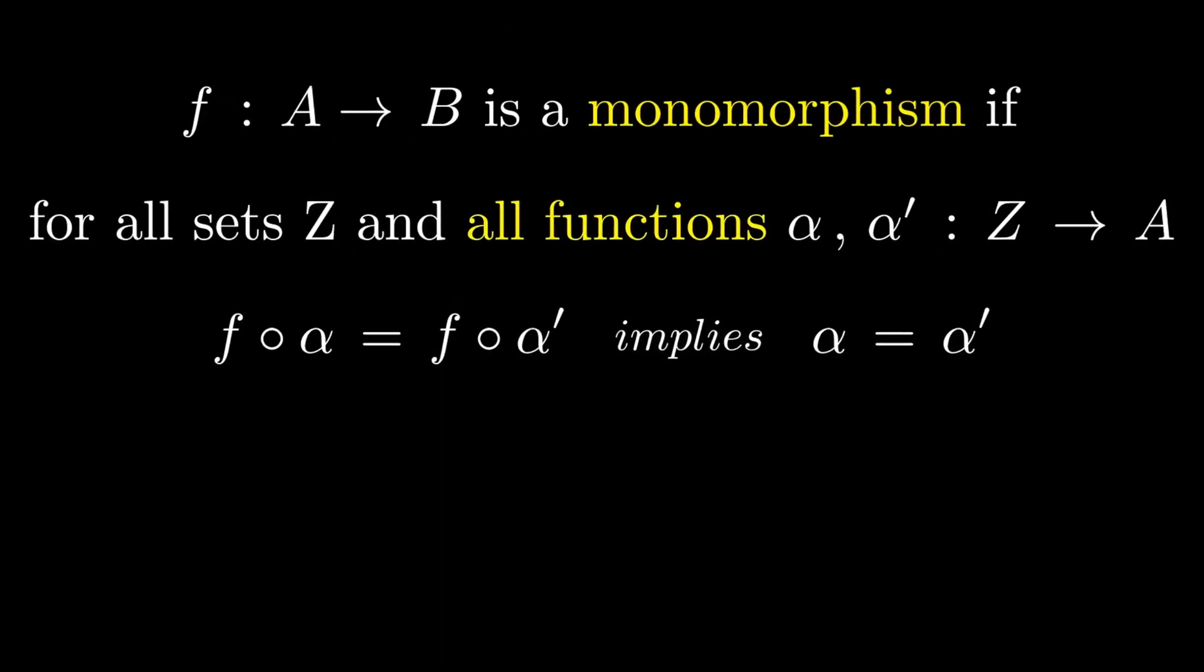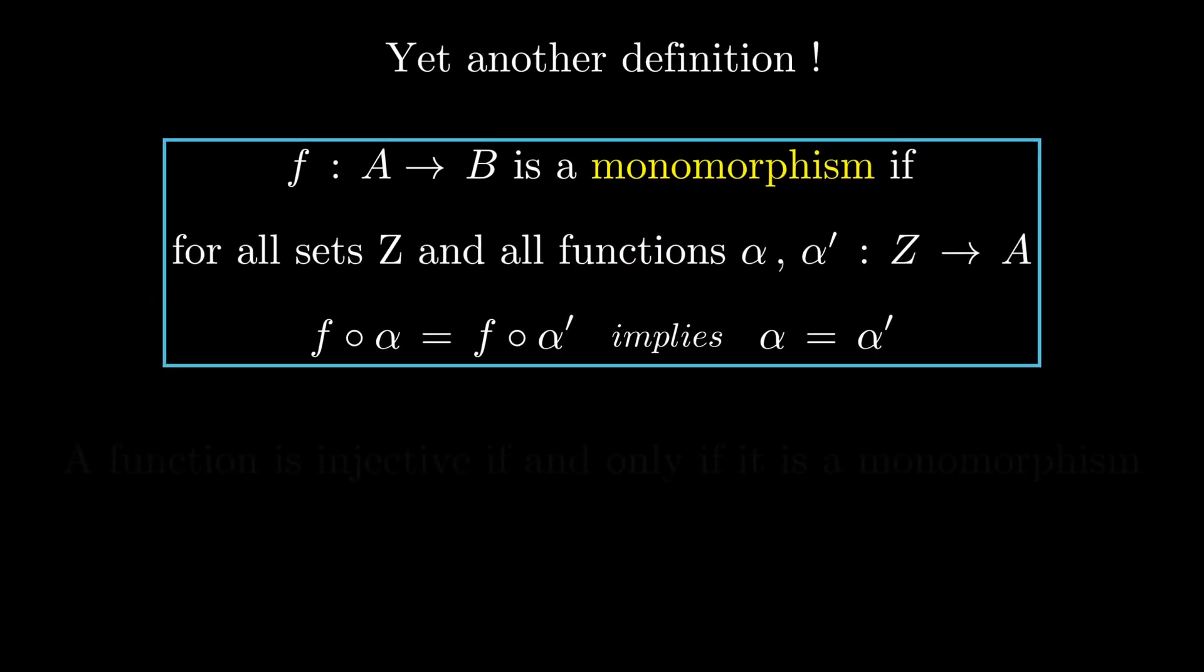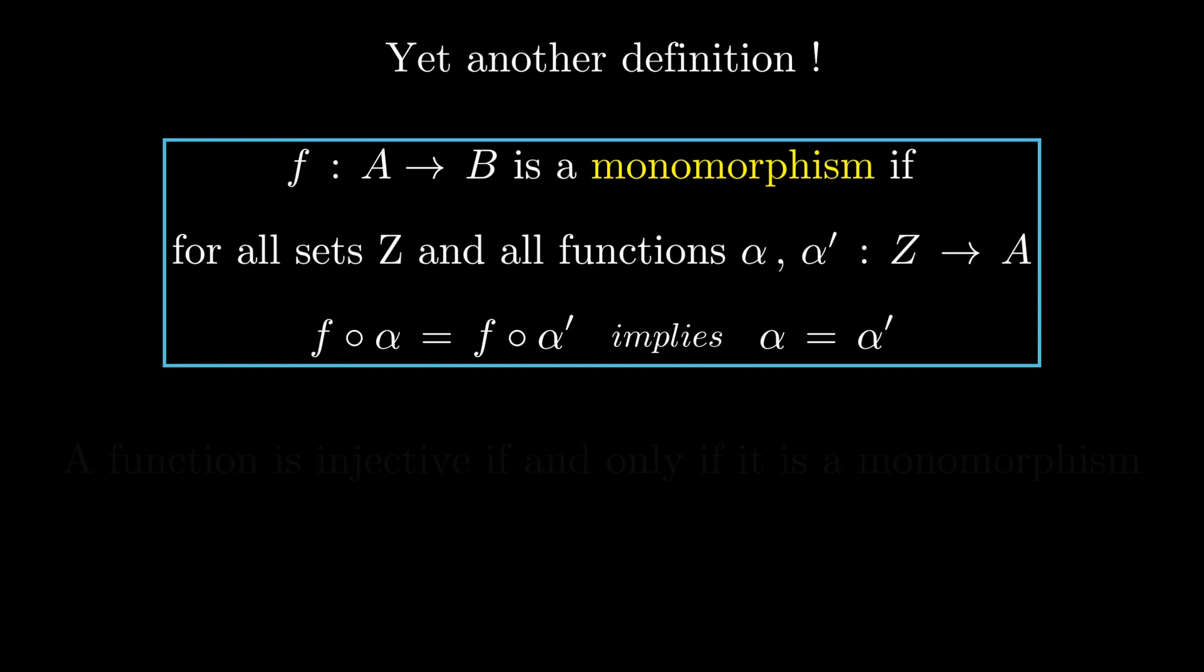Notice how monomorphisms do not care about elements. And the main surprise of this video is a function is injective if and only if it is a monomorphism. So, all three of these definitions define exactly the same thing. But they evolve from being element dependent to be solely about functions themselves.